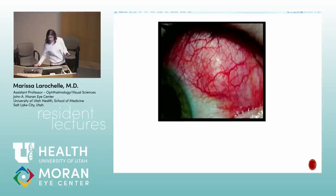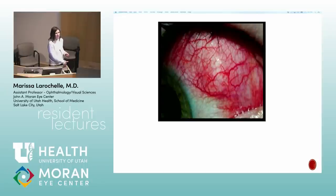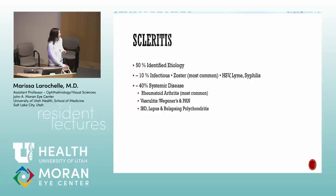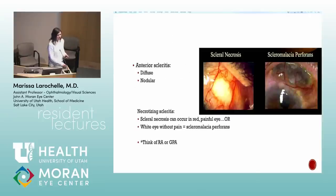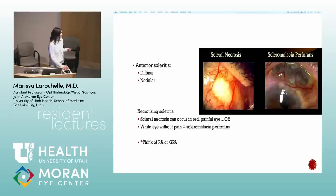Scleritis: if a red eye is tender to touch, painful, without itching or watering, think episcleritis or scleritis — there may be a nodule. We can find an etiology in about 50% of scleritis cases; some etiologies are scary. Rheumatoid arthritis is the most common cause. Infectious causes account for about 1 in 10, with herpetic being most common. Anterior scleritis: diffuse and nodular treated similarly. Necrotizing scleritis: the white, quiet, non-painful form is called scleromalacia perforans; painful necrotizing scleritis occurs with Wegener's and RA.